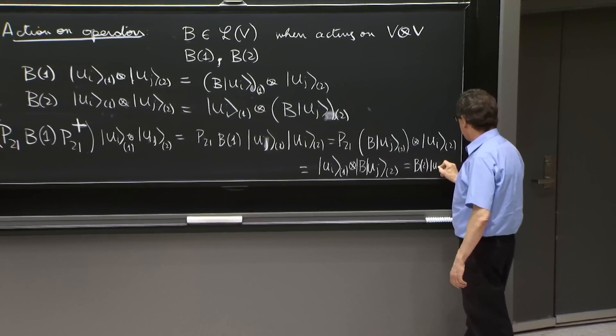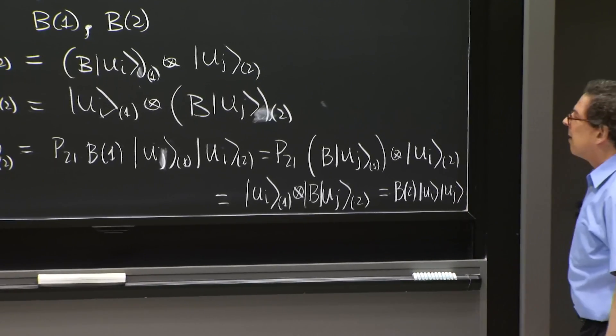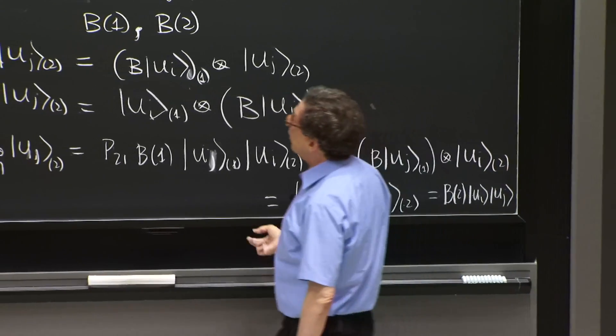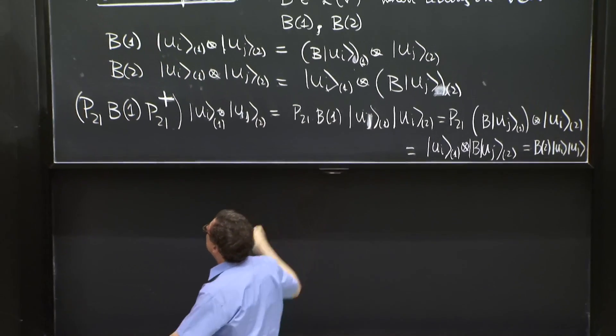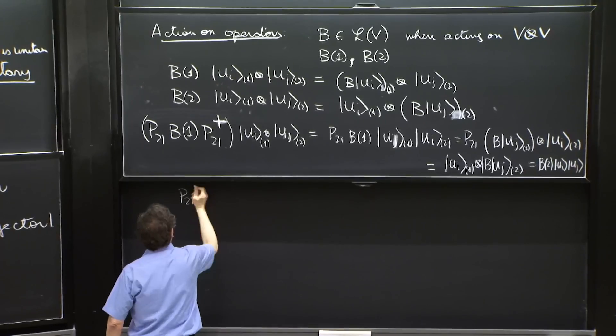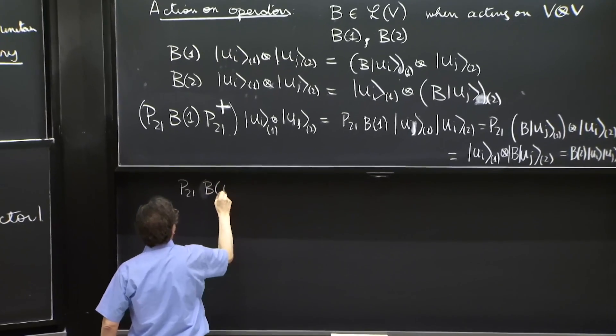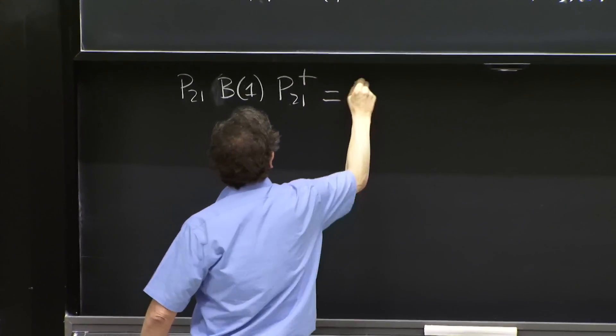So this is nothing else than B2 acting on the same state, the ui, uj. Which means, I guess I could use this blackboard, that P21 B1 P21 dagger is B2.